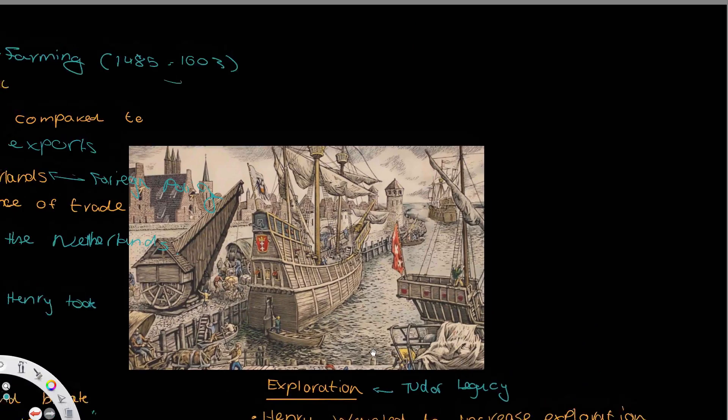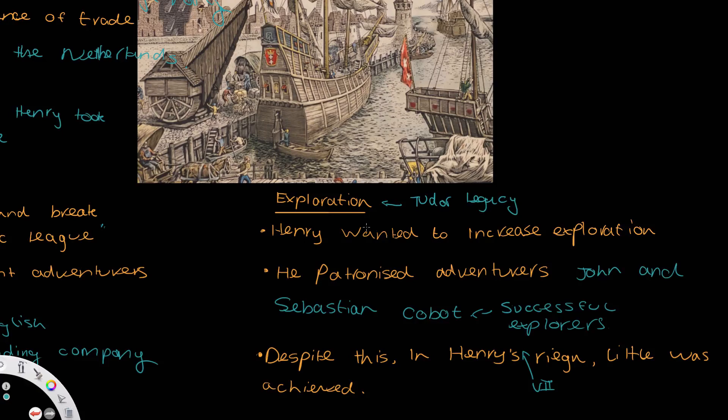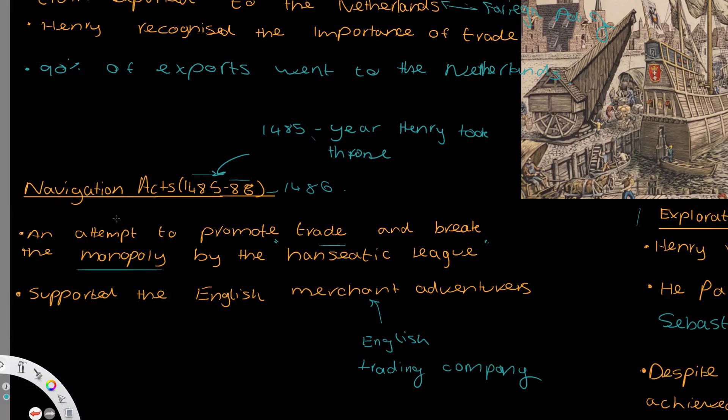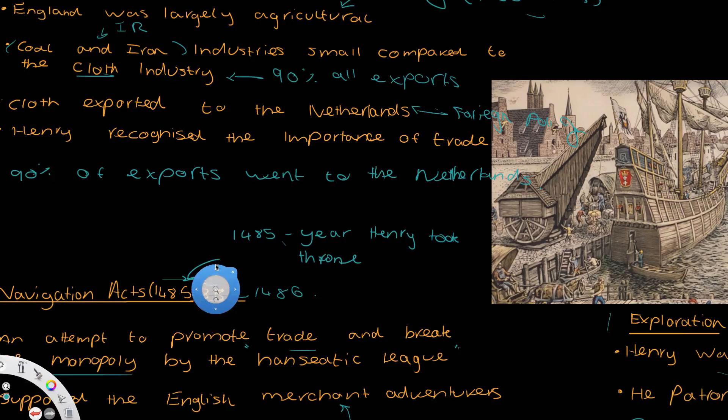So this is a very small topic chapter in terms of the specification. However, you do need to know about exploration — specifically the 1485 and 1486 Navigation Acts, which attempted to break the monopoly of the Hanseatic League. We've also got the general information about export and trade, and where the economy got the majority of its strength from.